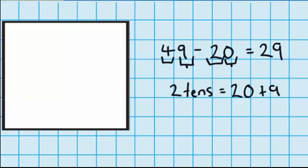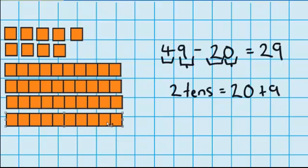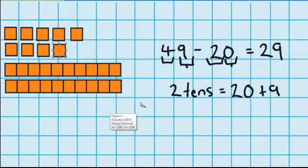Well, now let's remove this rectangle and find out if we were right. OK, so here's my 49, and the question says I need to take away 2 tens or 20. So, there's one 10 removed, and there's a second 10 removed.